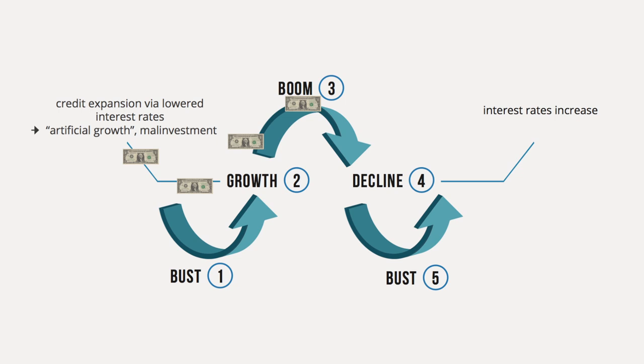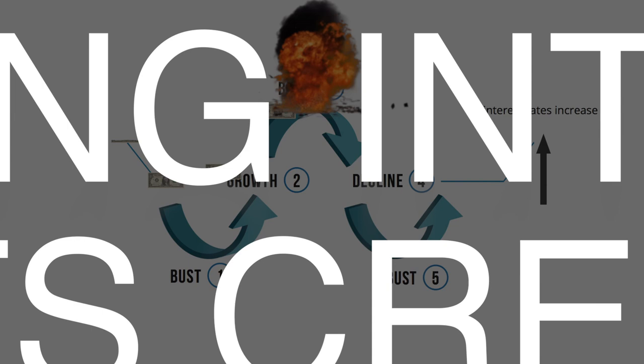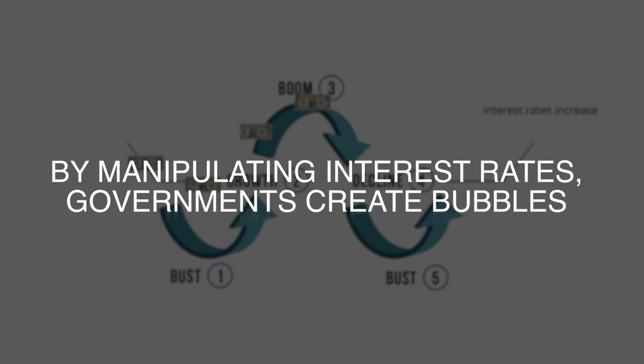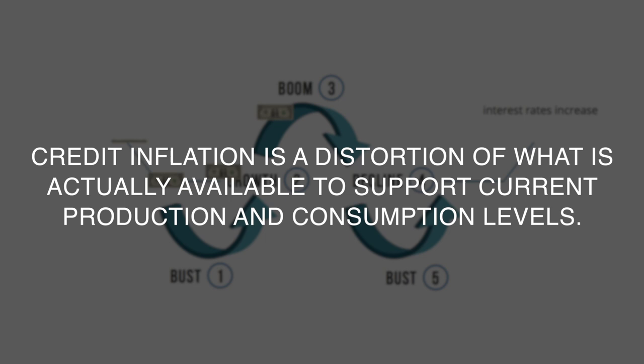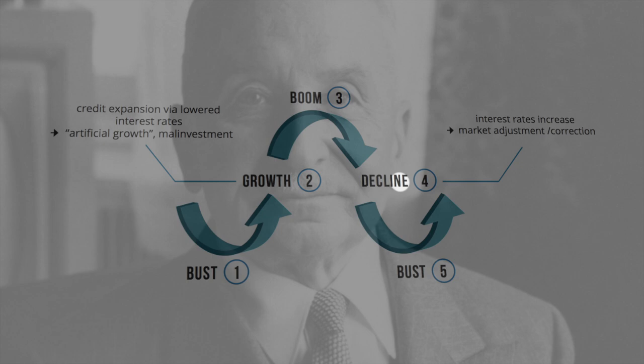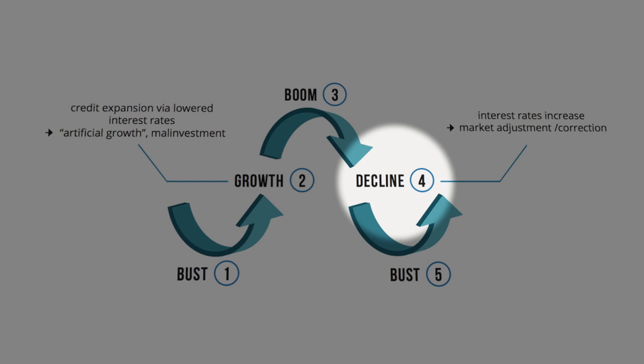By manipulating interest rates, governments create bubbles. Austrian business cycle theory argues that credit inflation is a distortion of what is actually available to support current production and consumption levels. That is why a correction is inevitable. Austrian economist Mises warned that the longer malinvestments continue, the more aggressive the correction becomes. A recession arrives when the economy readjusts as consumers come to reestablish their desired allocation of saving at prevailing interest rates.